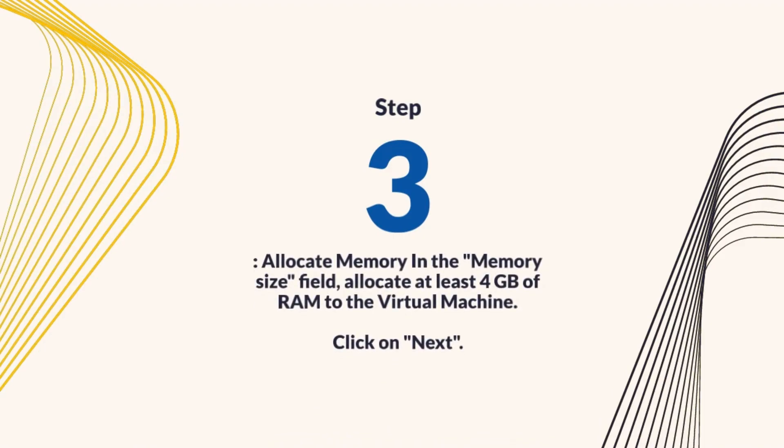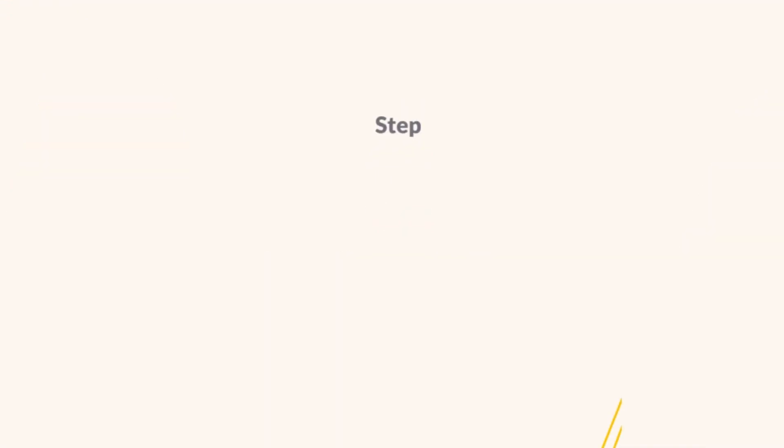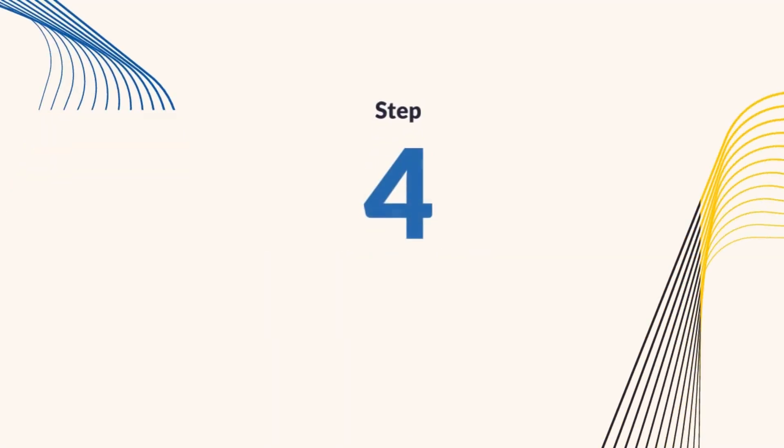Step 3: Allocate memory. In the Memory Size field, allocate at least 4GB of RAM to the virtual machine. Click on Next.